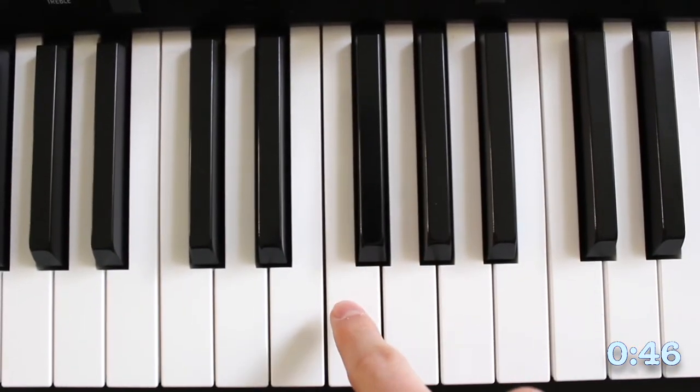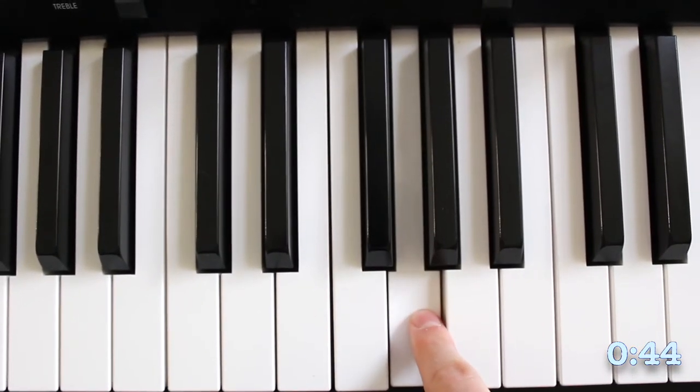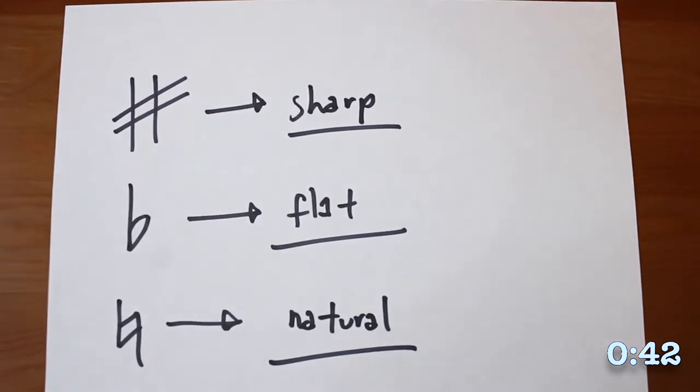Next door notes are called semitones. Two semitones is a tone. A sharp sign raises a note by one semitone, a flat goes down one, and a natural sign cancels them out.